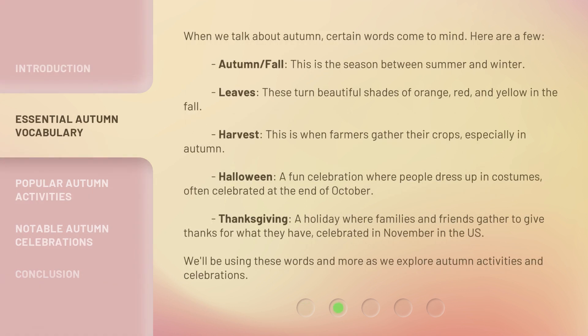When we talk about autumn, certain words come to mind. Here are a few. Autumn, or Fall — this is the season between summer and winter. Leaves — these turn beautiful shades of orange, red, and yellow in the fall. Harvest — this is when farmers gather their crops, especially in autumn.